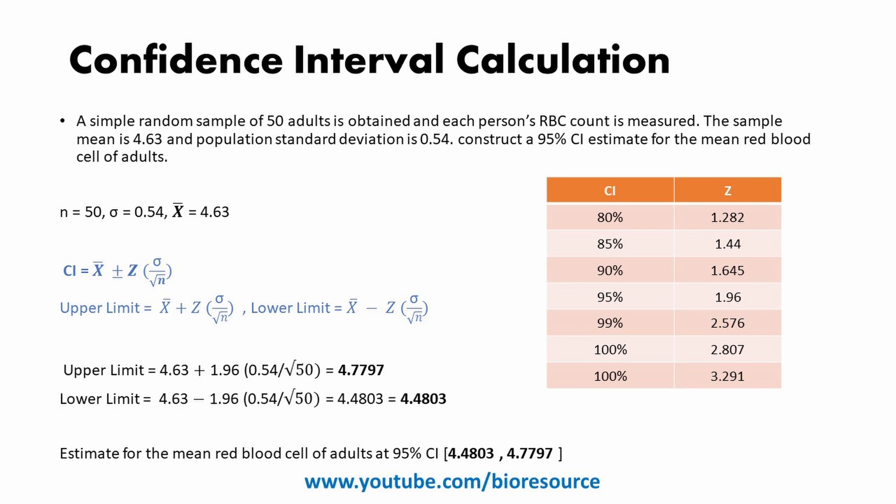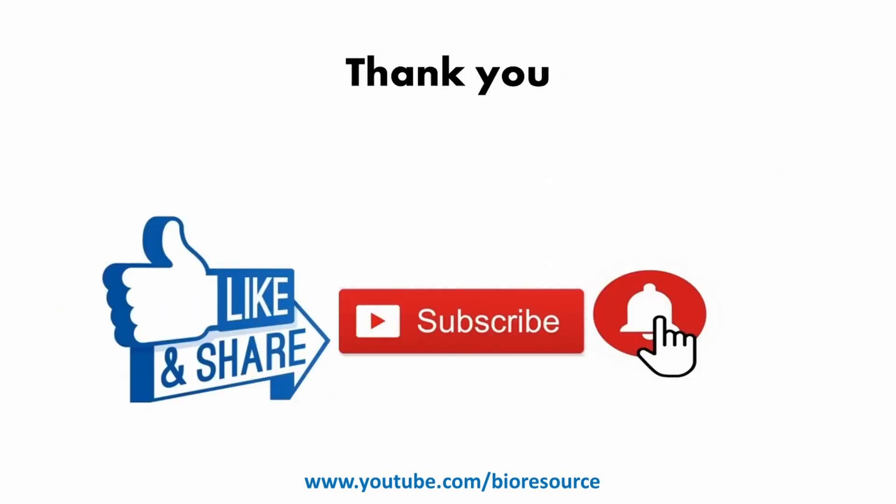In summary, the confidence interval is the range of values that we are confident the true population mean lies within. It is calculated using the sample mean, standard deviation, standard error, and margin of error. By understanding and interpreting the confidence interval, we can make more informed decisions based on our data. Hope you enjoyed this video — please press the like button and share it with your friends. Thank you.